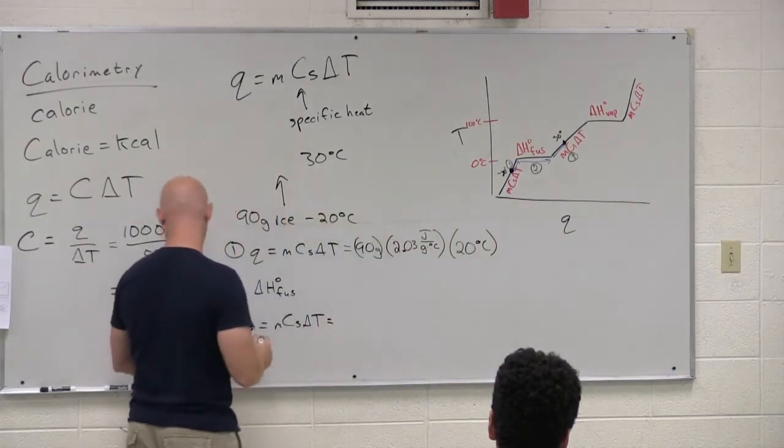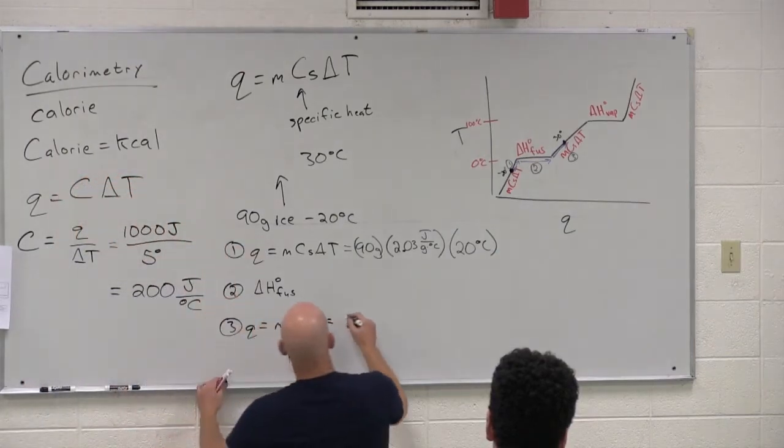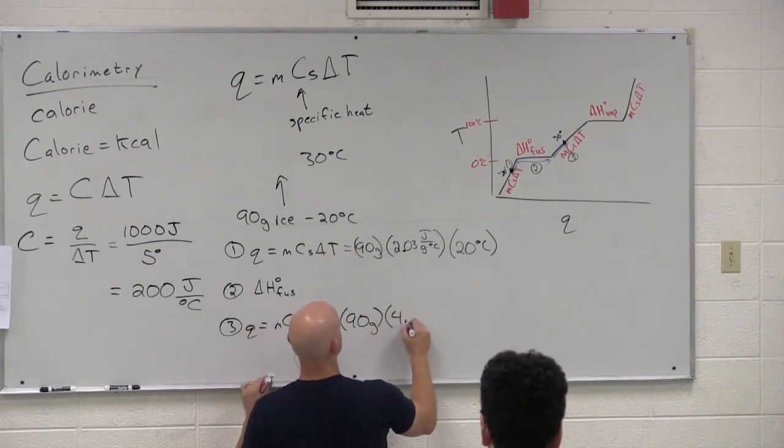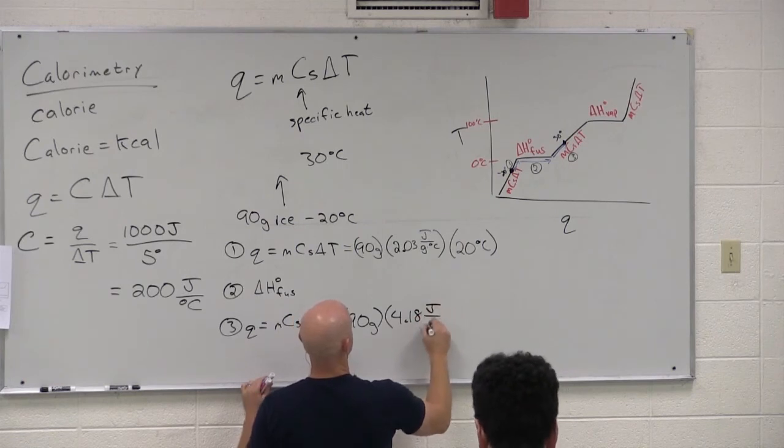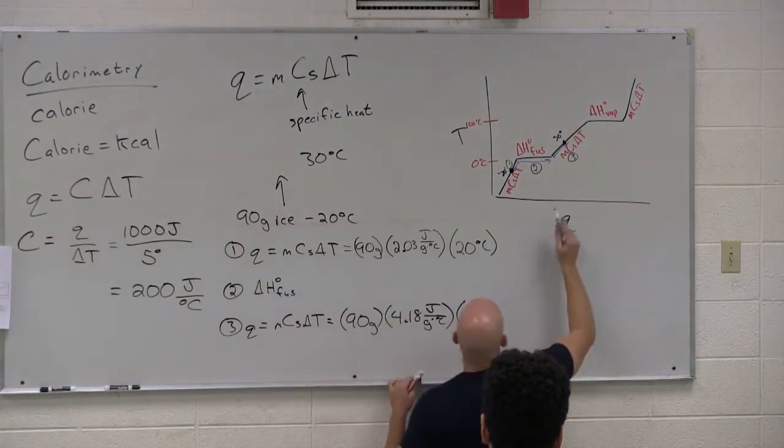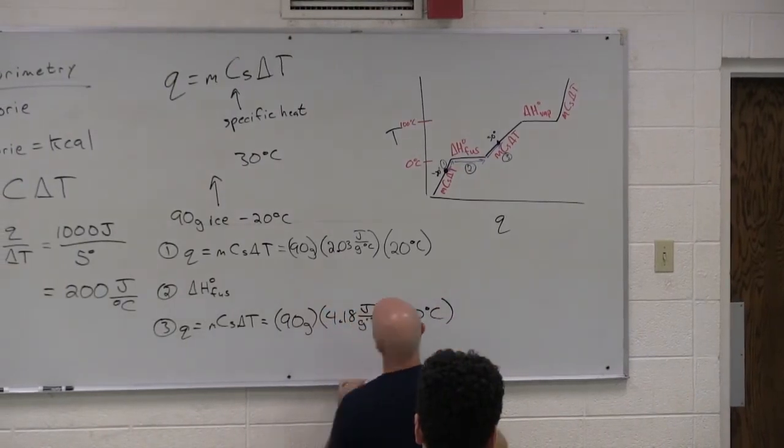Let's just do step three right off the bat because we got the same kind of calculation. For step three, what's my mass? Liquid water now. Still 90 grams. What's my specific heat? 4.18. Good. 4.18 joules per gram degree Celsius. And what's my temperature change? 30 degrees. Yep. Going from zero up to 30. So positive 30 here.